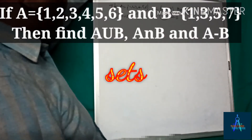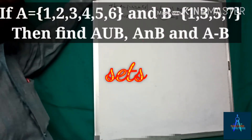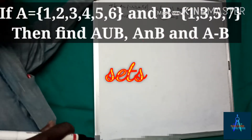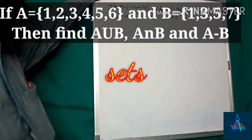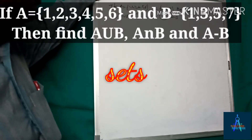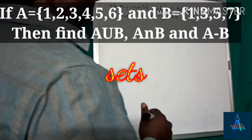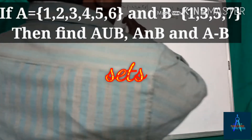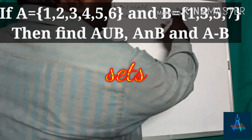Our question is: if A equals {1, 2, 3, 4, 5, 6} — this is set A — and B equals {1, 3, 5, 7}, then find A union B, A intersection B, and A minus B.